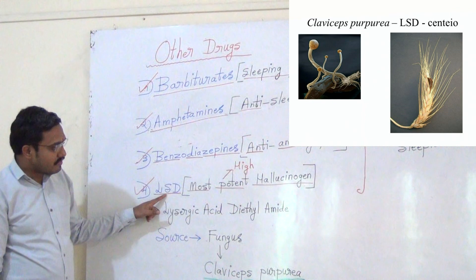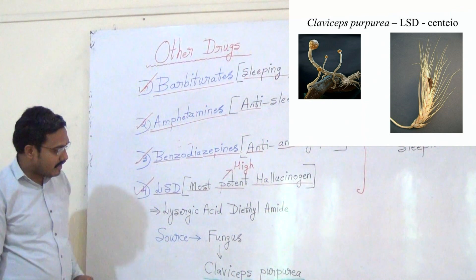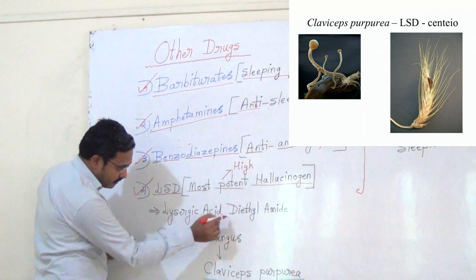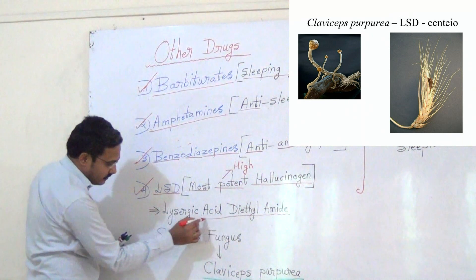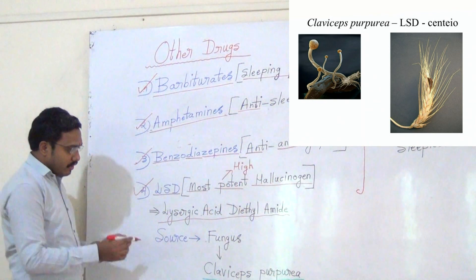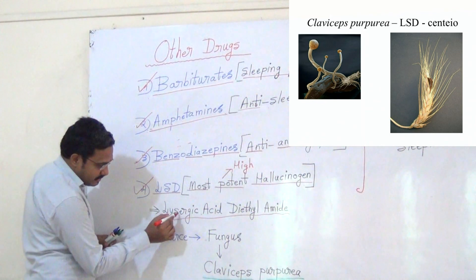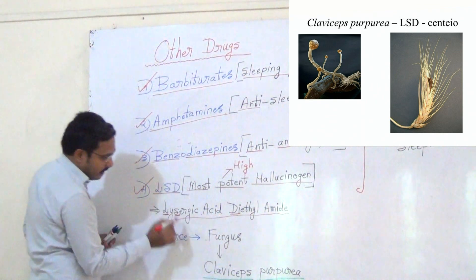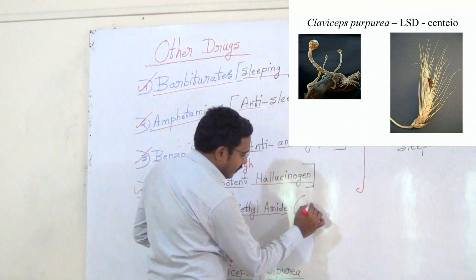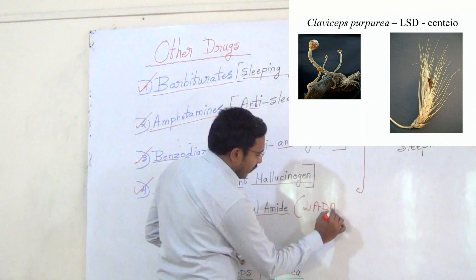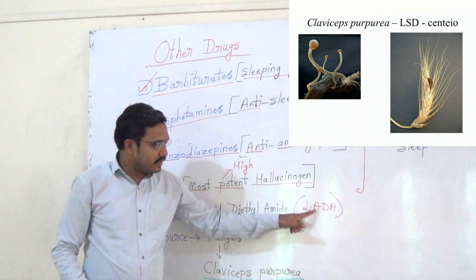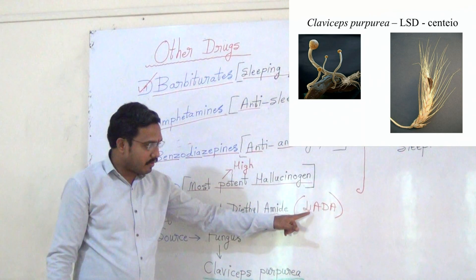Now, what is the full form of LSD? It is lysergic acid diethylamide. The L is taken from lysergic, the S from acid, and the D from diethylamide — making LSD. For remembering purposes you can use the mnemonic 'LADA' — lysergic acid diethylamide. But the full form of LSD is lysergic acid diethylamide.